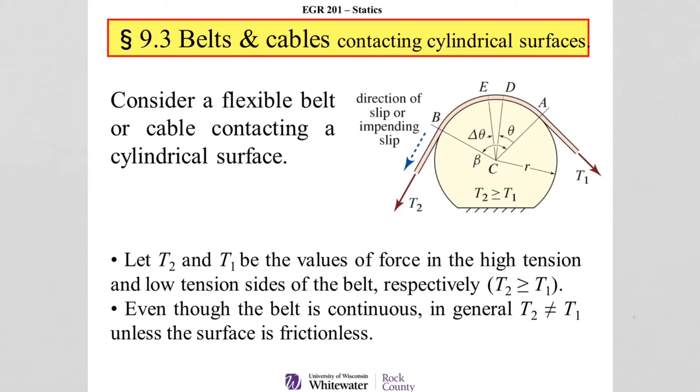The two main factors in determining what this T2 and T1 are, one is obviously the coefficient of static friction along that surface. The other part that's very critical is the amount of surface contact. Those are the two big things that we need to look at.